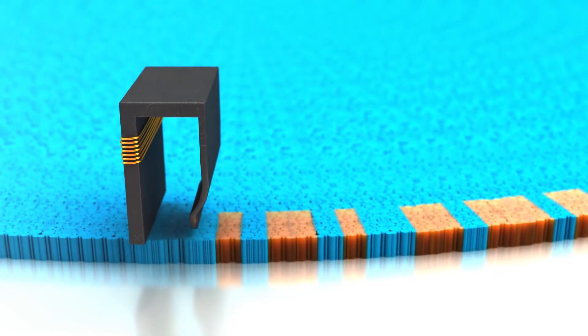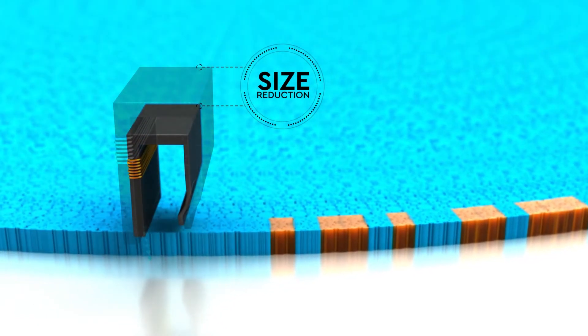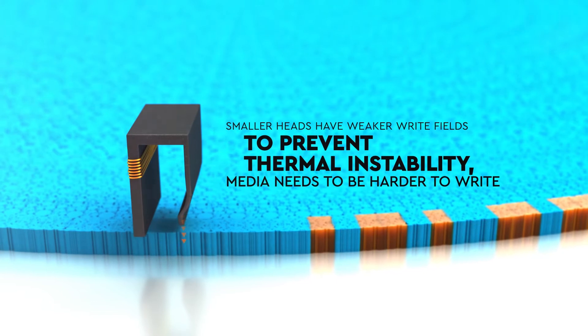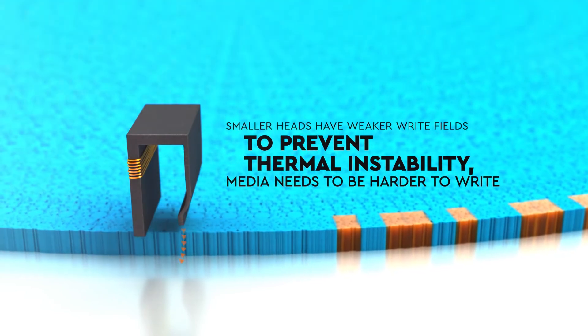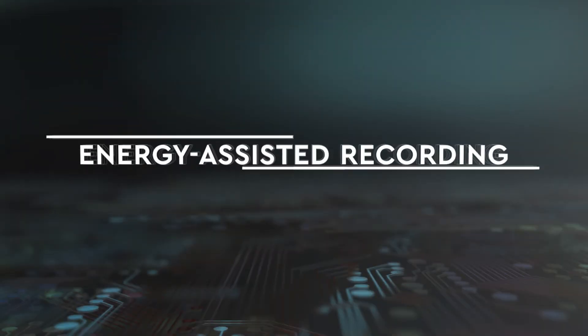To further expand storage capacities, both the write head and the magnetic grains that store bit information on the media must be scaled down. Increasing disk capacity requires a write head that uses energy to assist in writing to the disk.